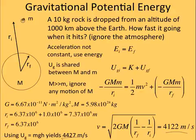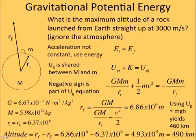So let's do another example. In this case, we're going to launch it up, and we want to know what is the maximum altitude the rock can reach if we launch it at 3000 m/s. So it's not going to get as high as 1000 kilometers because the previous one was going over 4000 meters per second when it hit.